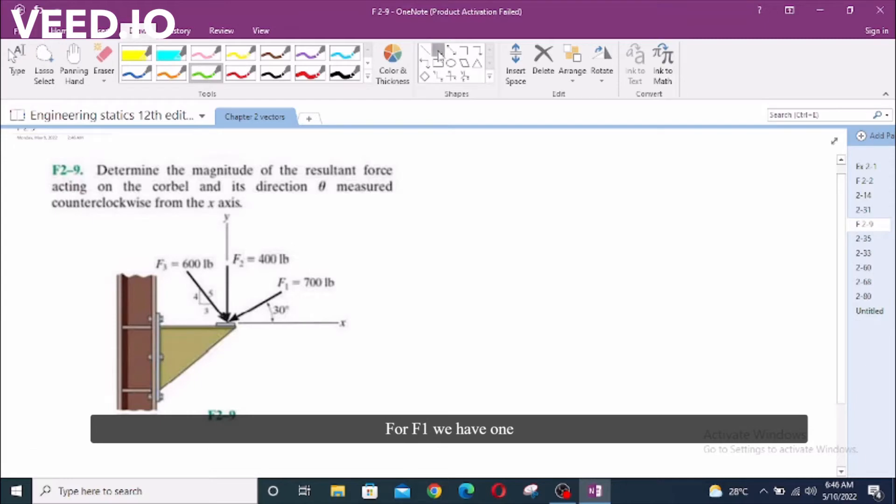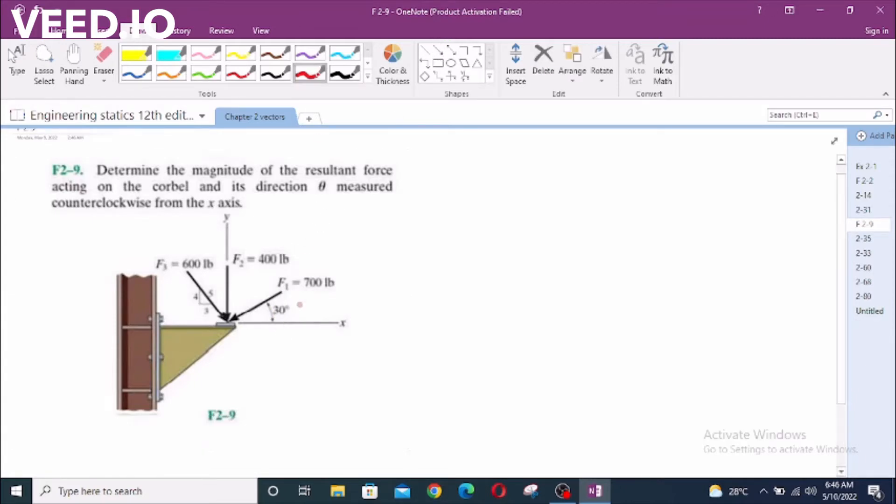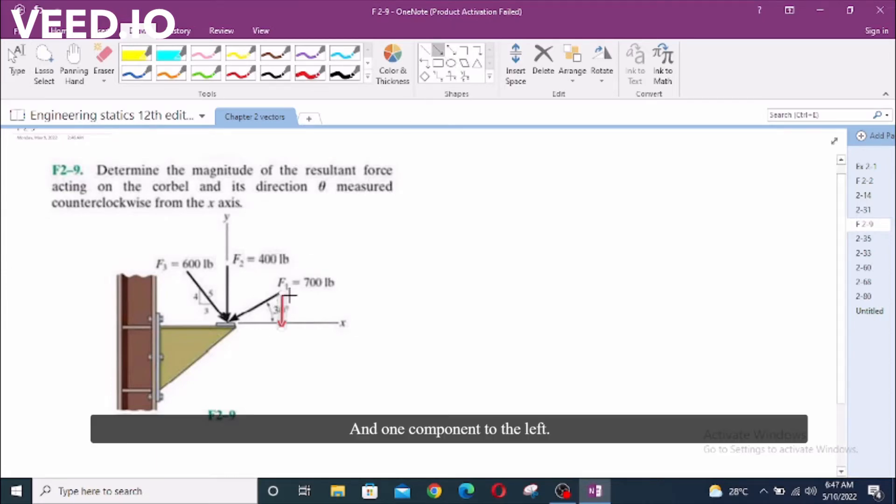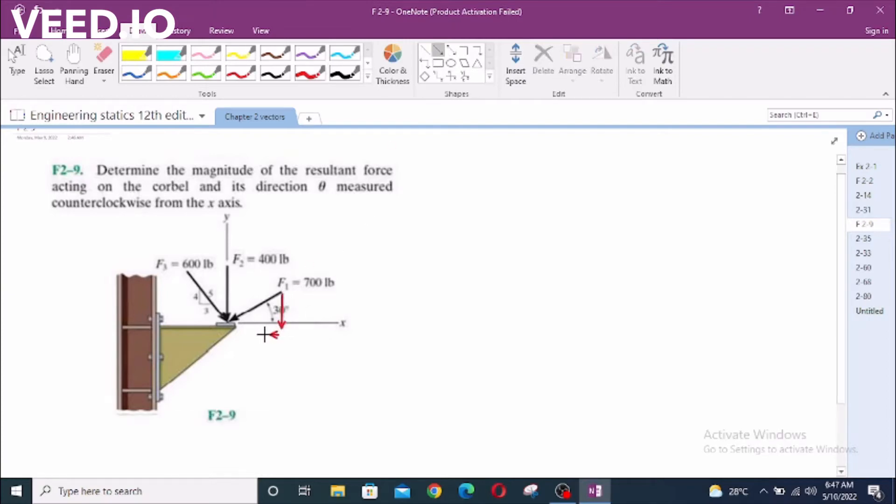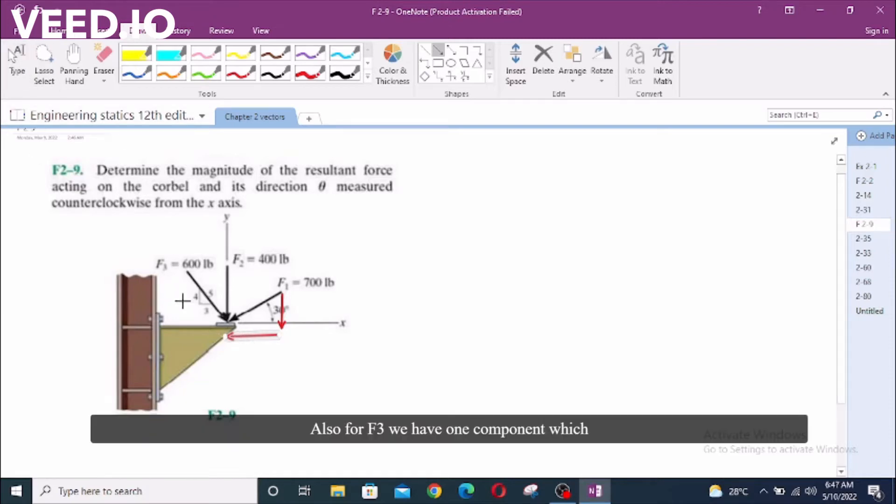For F1 we have one component which is acting downwards and one component to the left. Also for F3 we have one component which is acting downward and one component to the right.